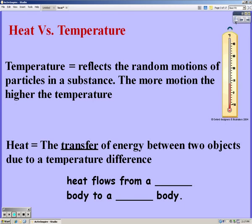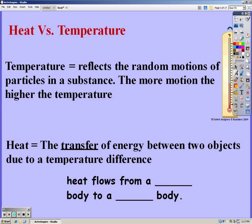Make sure you know the difference between heat and temperature. Temperature reflects the random motions of particles in a substance. The more motion a substance has, the higher the temperature is going to be. While heat is the transfer of energy between two objects due to that temperature difference, they're going to keep transferring heat until they're at the same temperature. Make sure that you know that heat flows from a hot body to a cool body.